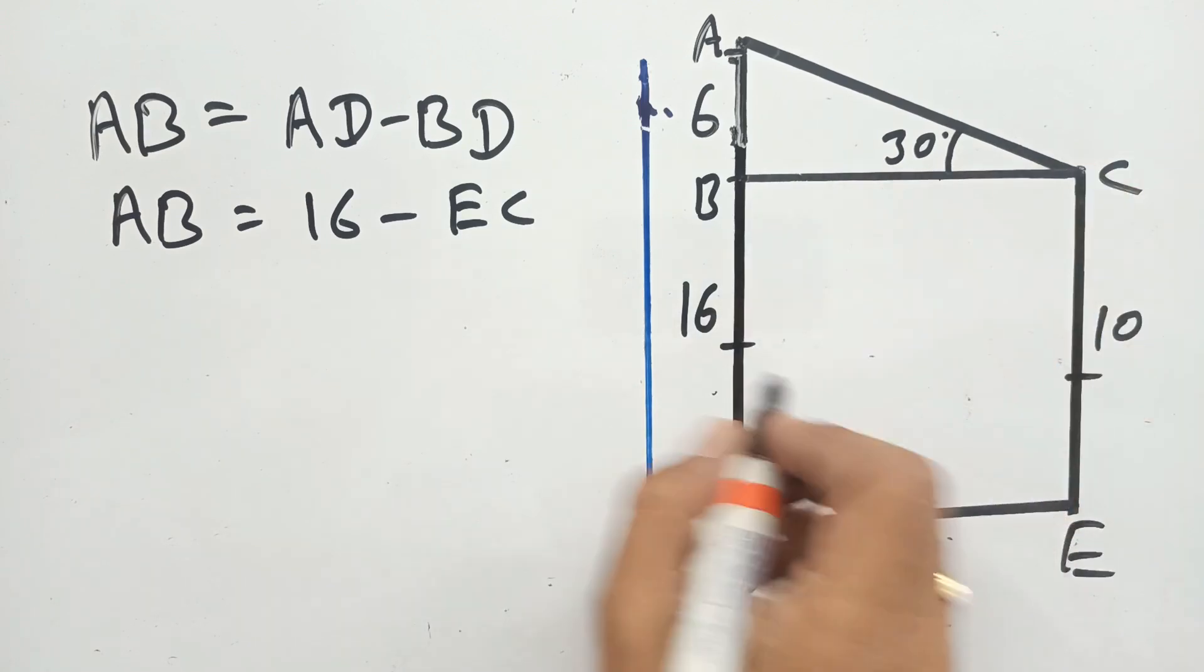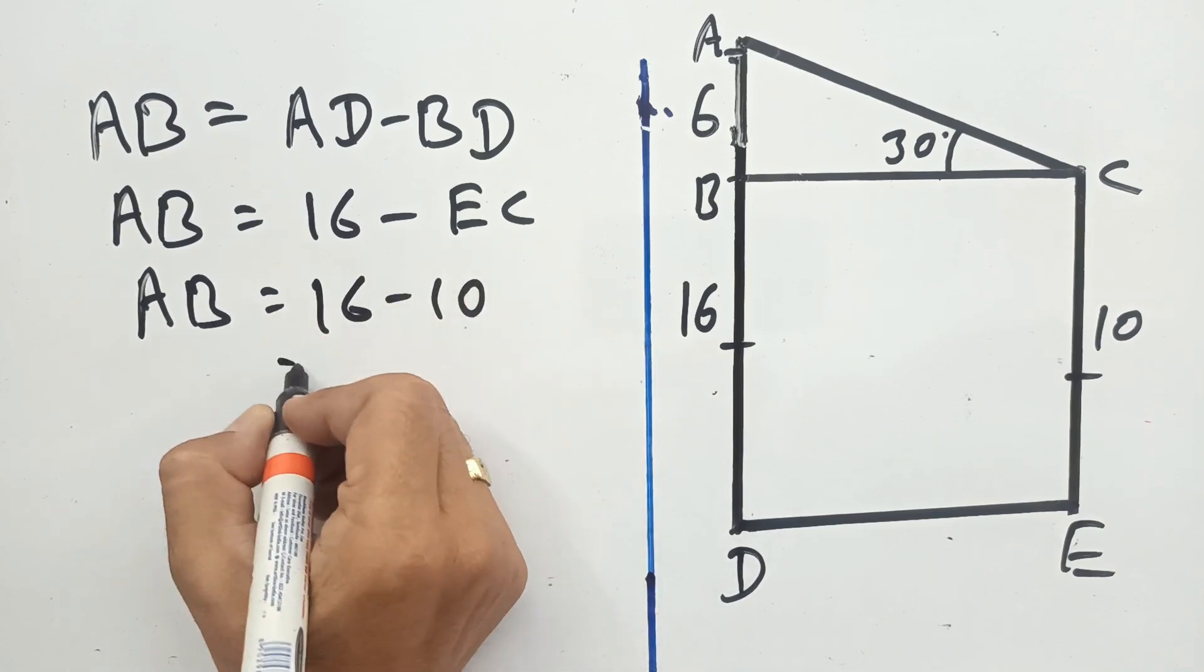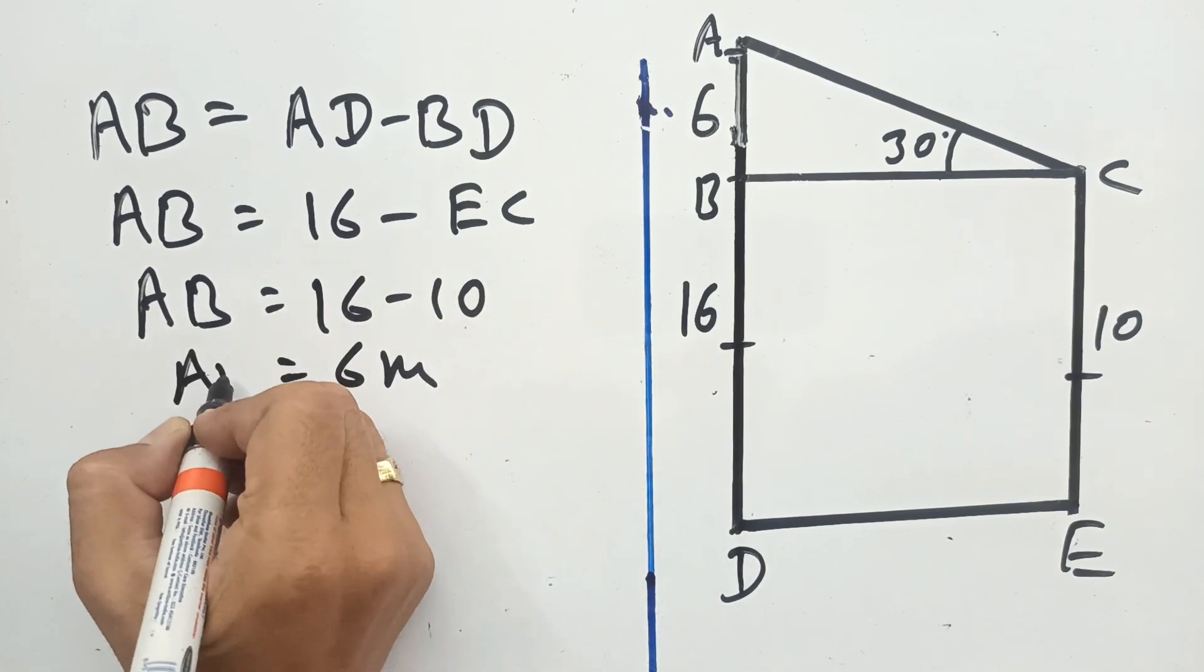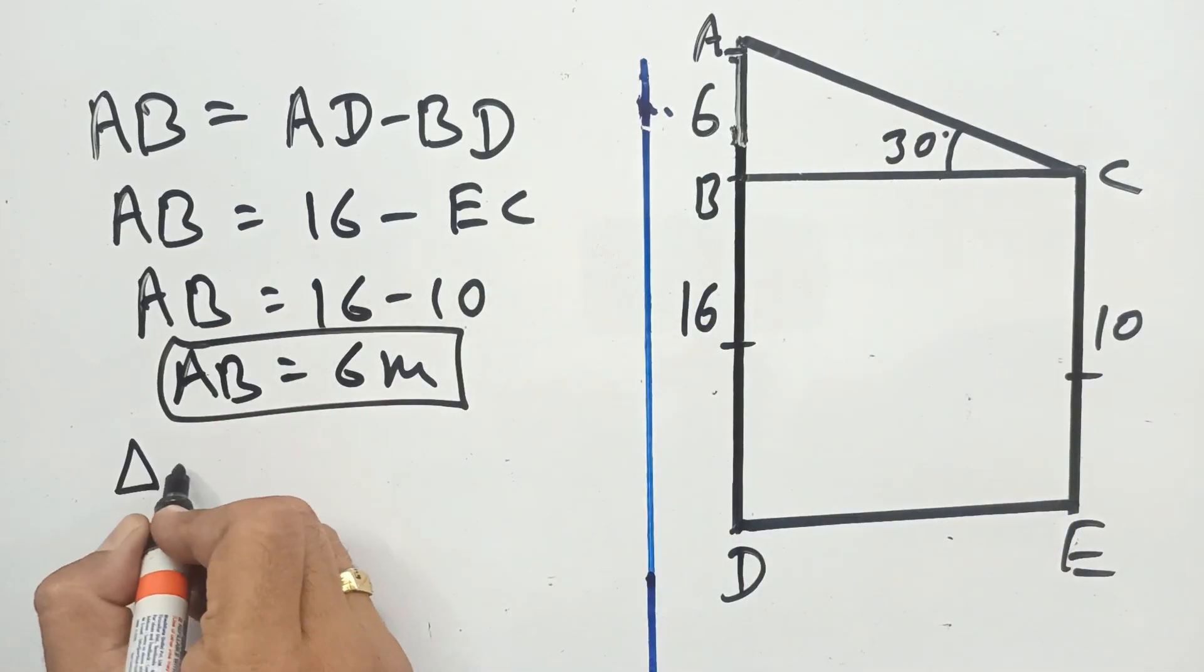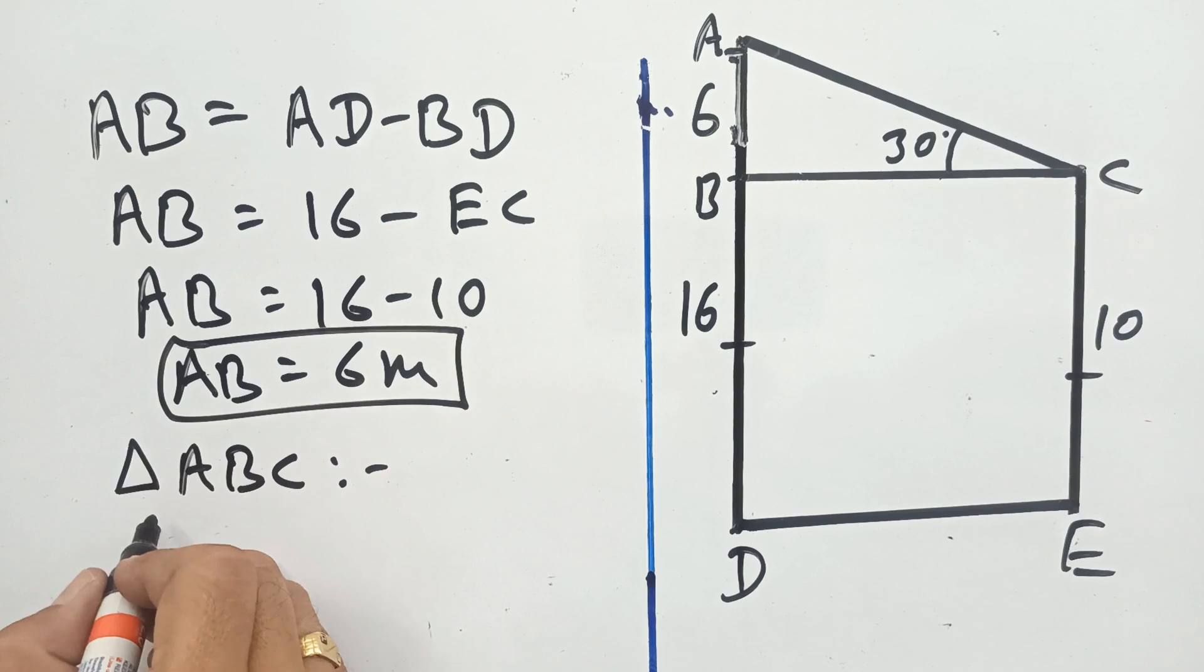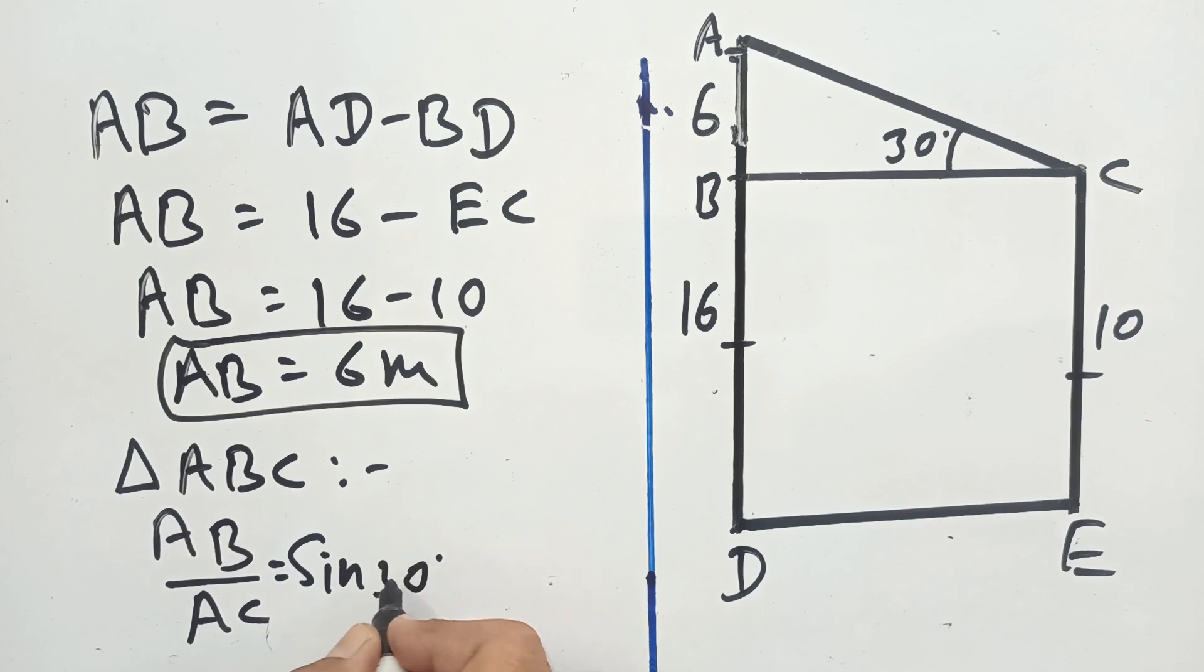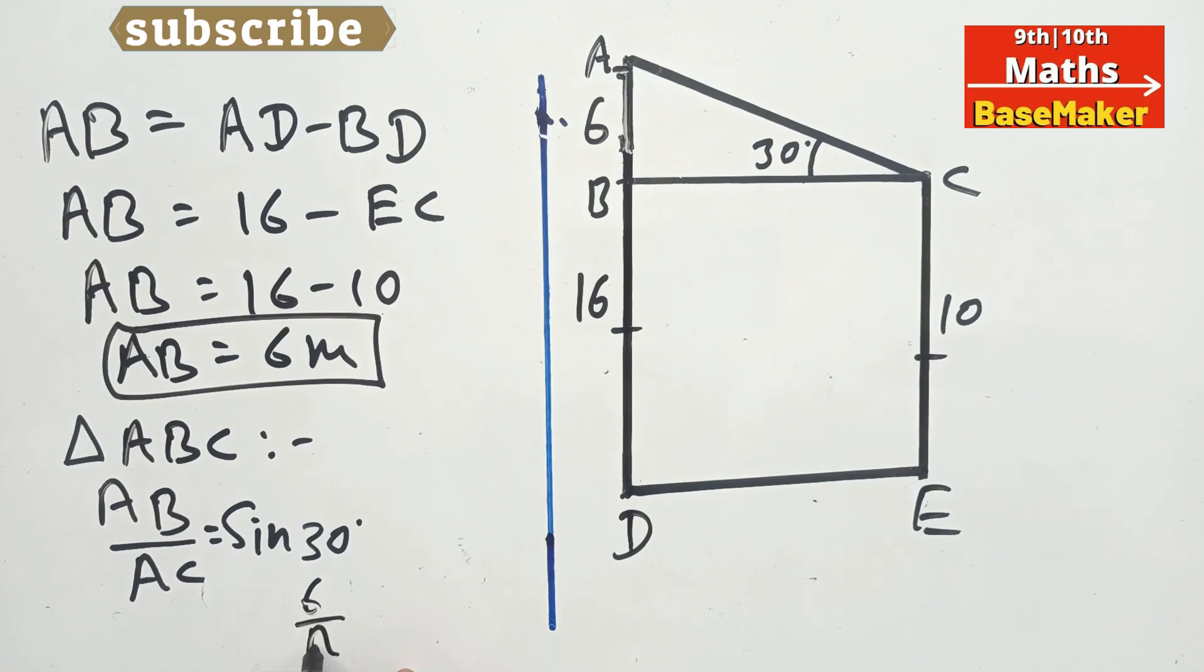Now in triangle ABC, AB upon AC is sin 30, which is 6 upon AC. Sin 30 value is 1 by 2, so AC will be 2 into 6, which is 12 meters.